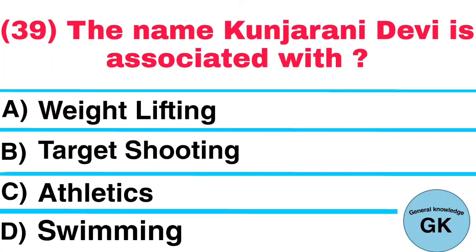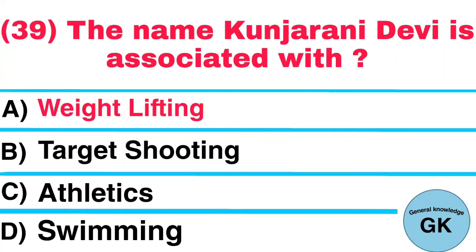Question number 39. The name Kunjarani Devi is associated with: A. Weight lifting, B. Target shooting, C. Athletics, D. Swimming. Answer: Weight lifting.